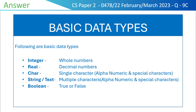The basic data types are: number 1, integer, which represents whole numbers. Number 2, real, which represents decimal numbers. Number 3, char, which represents a single character — it can be alphanumeric or any special character. Number 4, string or text, which represents multiple characters — it can be alphanumeric or any special characters. Lastly, boolean, which represents logical true or false, or yes or no.